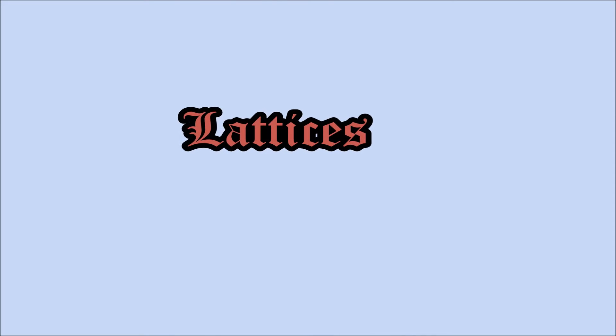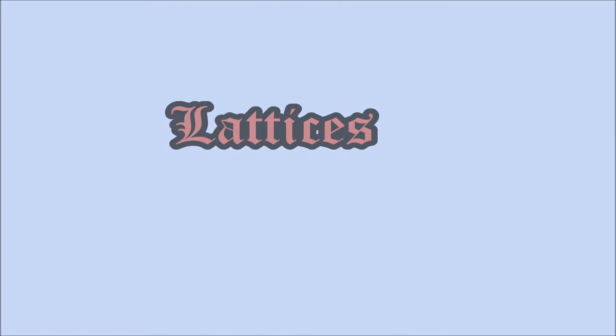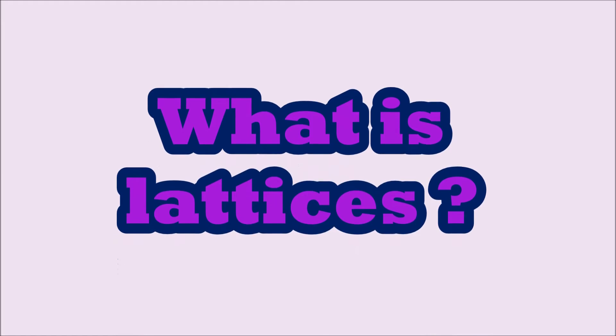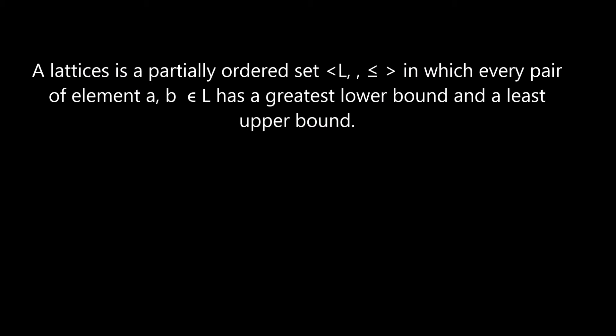Welcome to our animation on Lattices. Instead of just learning the topic, we are going to see what Lattices is. Lattices is a new concept that came from a partially ordered set. The definition: a Lattice is a partially ordered set, which is a pair (L, ≤), in which every pair of elements A, B belonging to L has a greatest lower bound and a least upper bound.